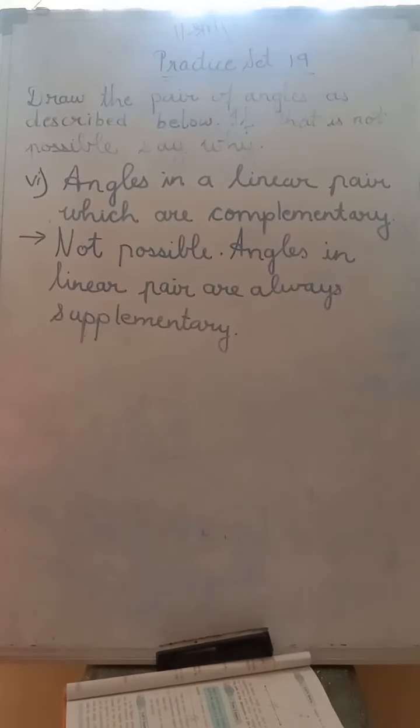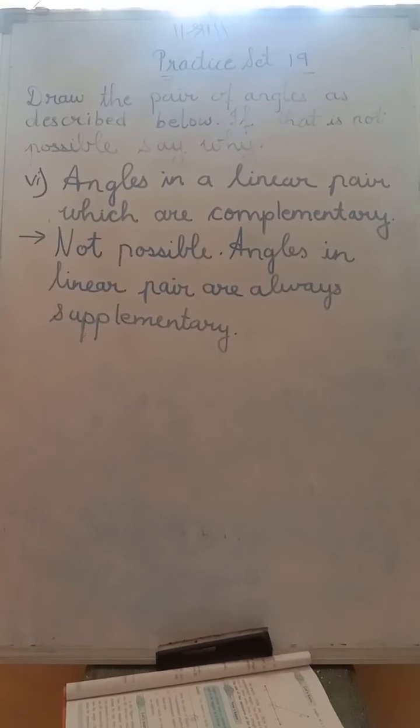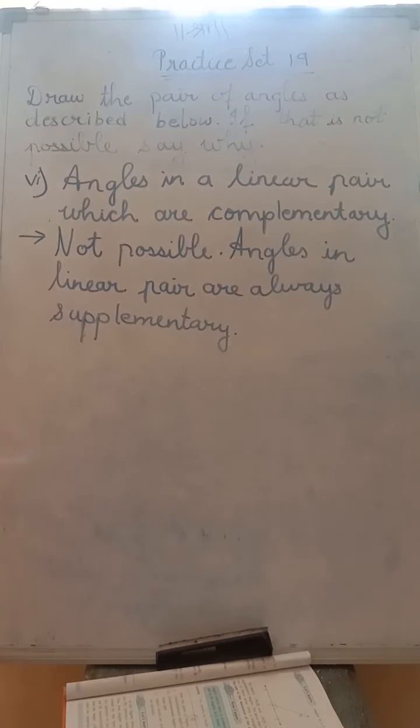The last question — question 6 — is: angles in a linear pair which are complementary. Are we able to draw this? No, it is not possible, because angles in a linear pair are always supplementary. You have to write that reason as the answer for the sixth question. Now you will write the notes we have discussed and after that solve Practice Set 19 in your classwork in neat and clean handwriting.